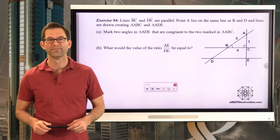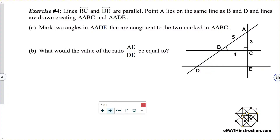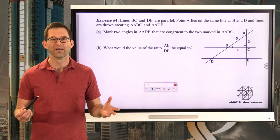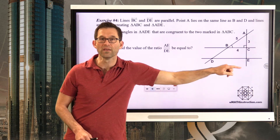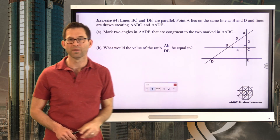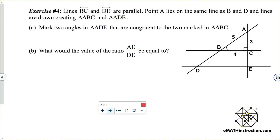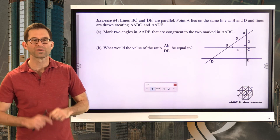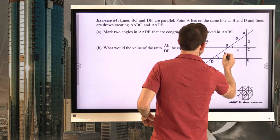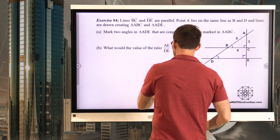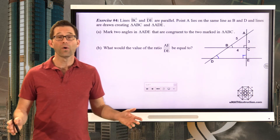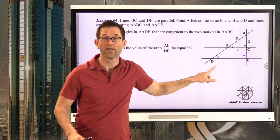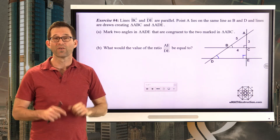Exercise number four. Lines BC and DE are parallel. Point A lies on the same line as B and D, and lines are drawn creating triangle ABC and triangle ADE. Mark two angles in ADE that are congruent to the two marked in triangle ABC. It's all about corresponding angles — this angle corresponds to that one. Since a right angle was used to mark one, we use a right angle to mark the other. That's all it takes to know that triangle ABC and triangle ADE are similar — the angle-angle criterion.